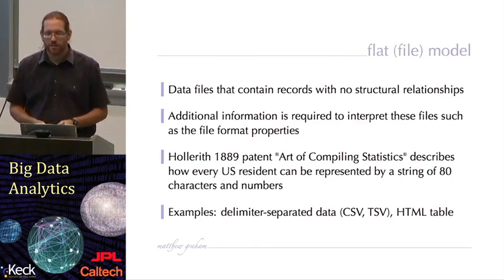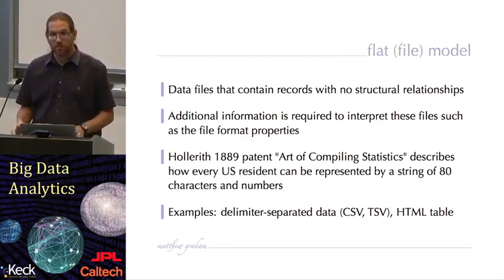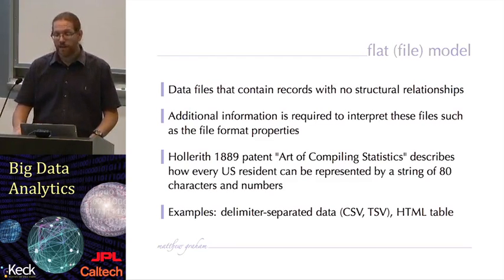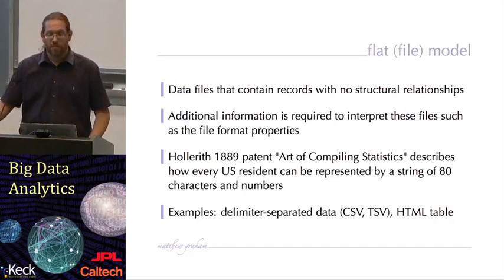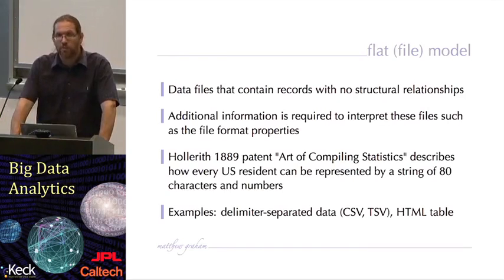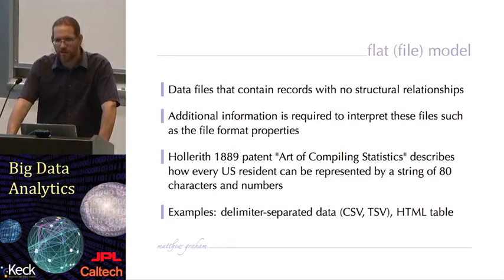The first, and possibly the simplest data model to consider, is the flat or file data model. This is essentially data files that contain records with no structural relationships — it's just the basic data. Additional information is required to interpret these, such as file format properties. I may have the data in three different flat file models on my hard drive: one would be basic ASCII columns, one might be comma-separated variable, and one might be in the form of a basic HTML table for displaying on a web page. The data is structured in the sense that there are columns and rows, but additional information is required to interpret which column is which and what the spacing is.